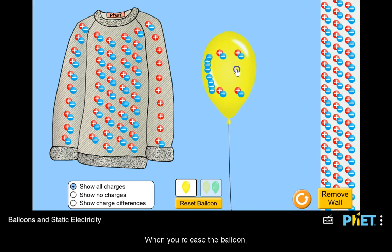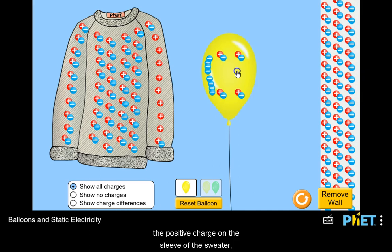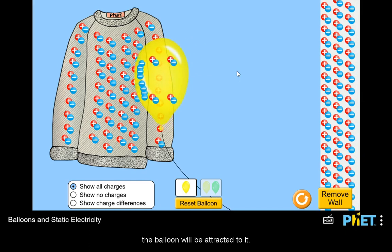When you release the balloon, the electrons are still attracted to the positive charge on the sleeve of the sweater, and hence the balloon will be attracted to it.